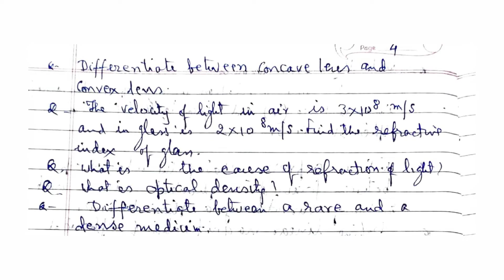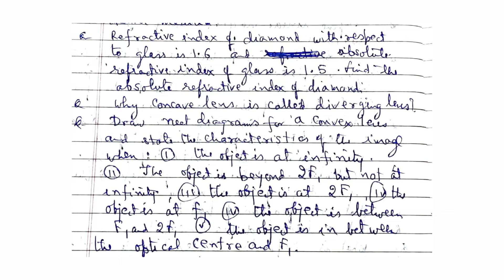Differentiate between concave lens and convex lens. The velocity of light in air is 3×10⁸ m/s and in glass is 2×10⁸ m/s — find the refractive index of glass. What is the cause of refraction of light? What is optical density? Differentiate between a rare and a denser medium. The refractive index of diamond with respect to glass is 1.6 and the absolute refractive index of glass is 1.5 — find the absolute refractive index of diamond.